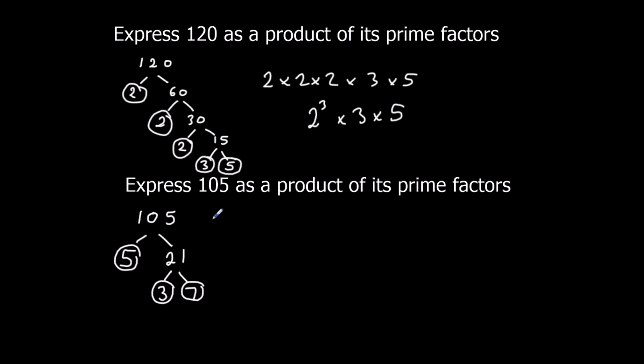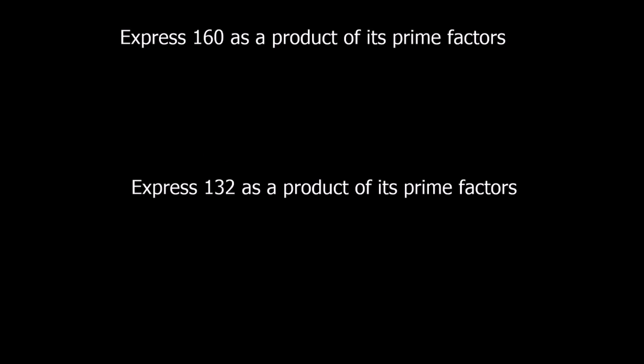So 105 as a product of its prime factors is 3 times 5 times 7. Pause the video and see if you can have a go at these two questions. I'll go through the answers afterwards.